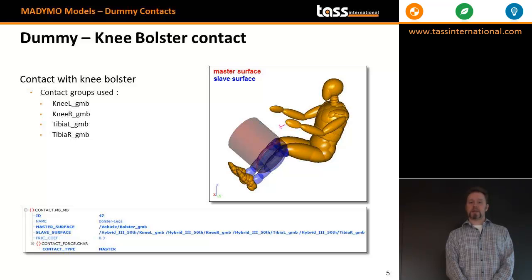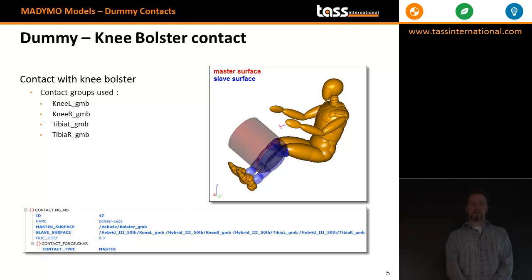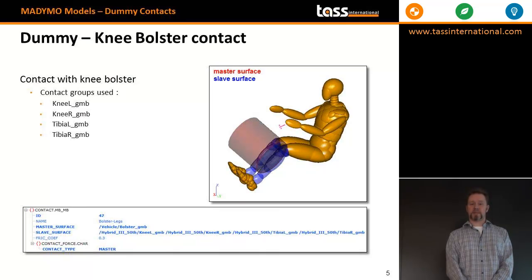The dummy knee bolster contact is defined between the knees and tibias and the knee bolster. In this case, the knee bolster is the master, and because it is a soft, compliant component, the master contact characteristic is used. In most cases, with rigid or stiff contacts, the dummy contact characteristics are used.